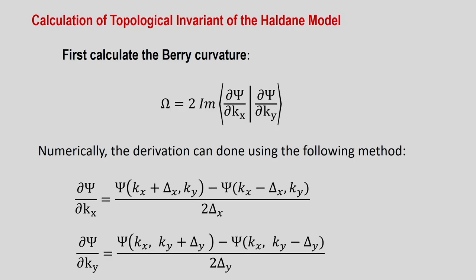Here we can calculate topological invariants and from them arrive at the quantum Hall expression and Hall plateaus. For that we need to calculate the Berry curvature. The Berry curvature is defined as twice the imaginary part of the inner product of del_psi/del_kx and del_psi/del_ky. The wave function psi corresponds to the Hamiltonian which has a tight-binding term, an inversion-breaking term, and a Haldane term. One can take the full tight-binding form or a low-energy form.